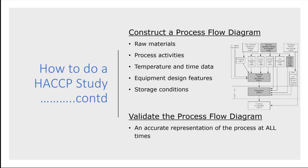The first thing we want to do is construct a process flow diagram. This is a method of demonstrating how material flows into our business and the steps it takes within our business. We must look at some critical areas: any specific raw material that needs additional controls, any specific process activities we have to undertake as part of our production, any temperature and time control information we have to record — for example, the length of time a product is outside controlled freezer or chilled temperatures, or any time or temperature lost when it's in a distribution vehicle. We may also want to look at equipment design features.